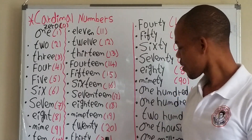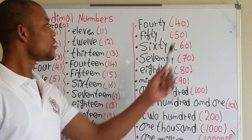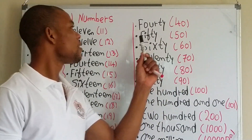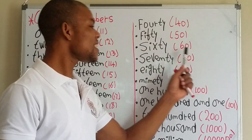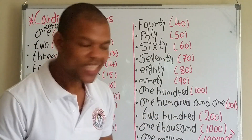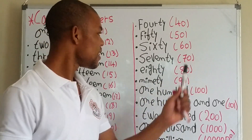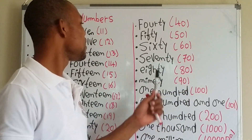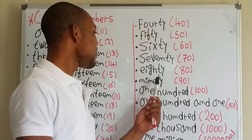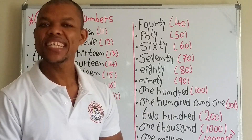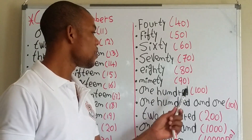30. 30. 40. 40. 50. 60. 60. 70. 70. 80. 80. 90. 90. 100. 100.